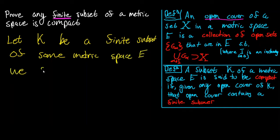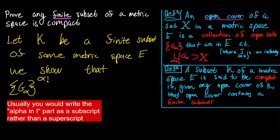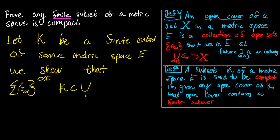To show K is compact, we show that if we have some open cover of K — that is, some collection of open sets, each indexed by alpha where alpha is in some indexing set I — such that K is contained in the union of all of these G alphas. That is what it means for this collection to be an open cover of K.